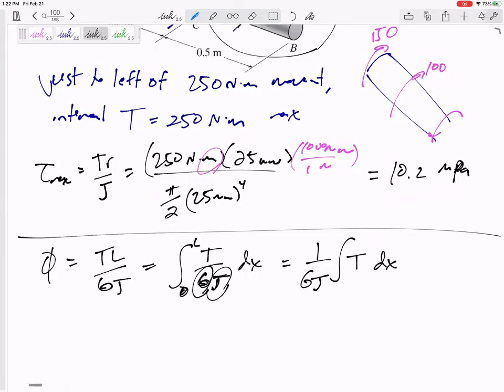The integral of TL over GJ as X goes from zero to L. Is the G changing? Is the J changing? We can factor those out and just do the integral of T dx. So the hard part, we have to find an equation for T. We've got to write an equation for T. And like I said, it's changing.